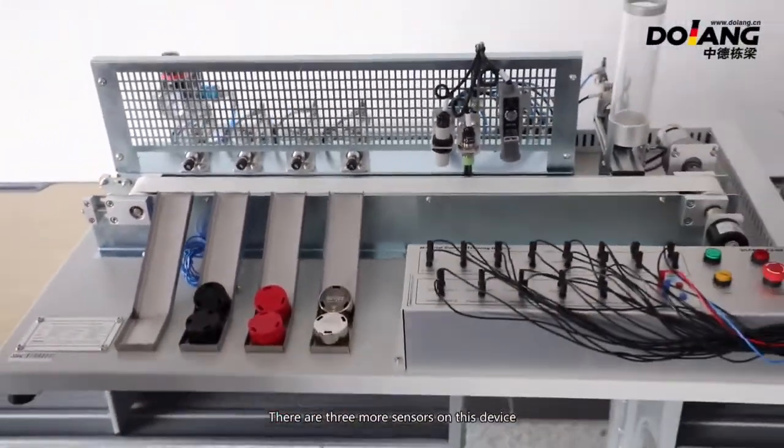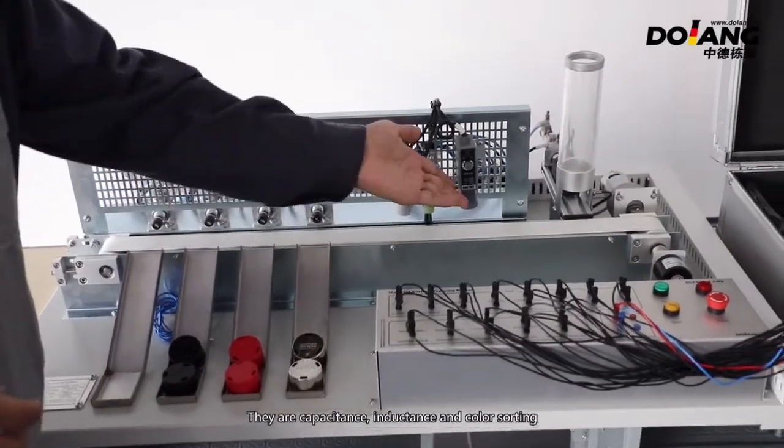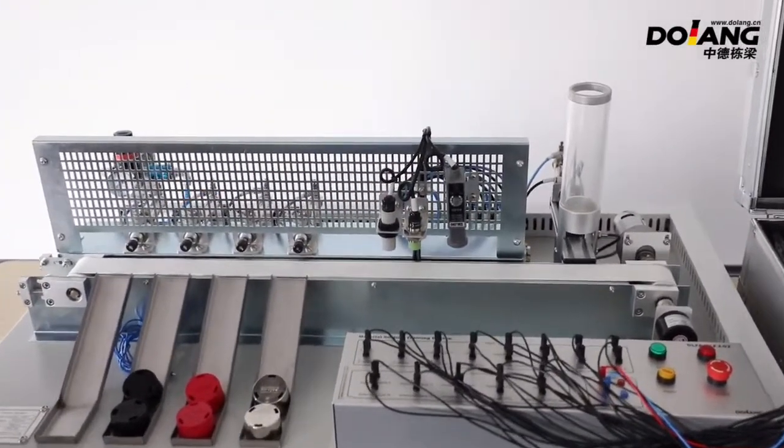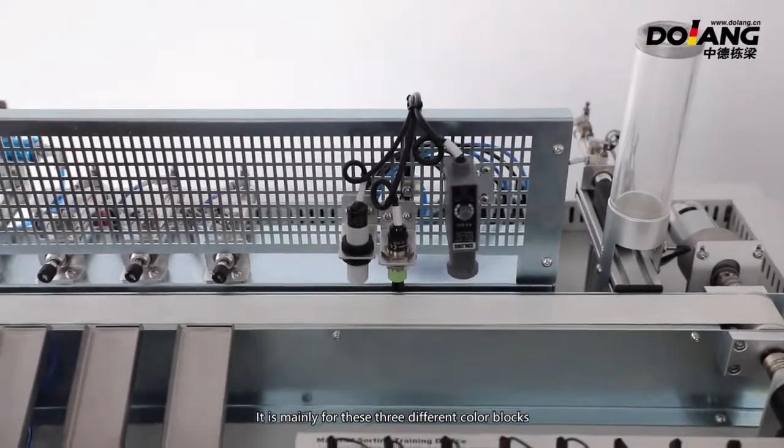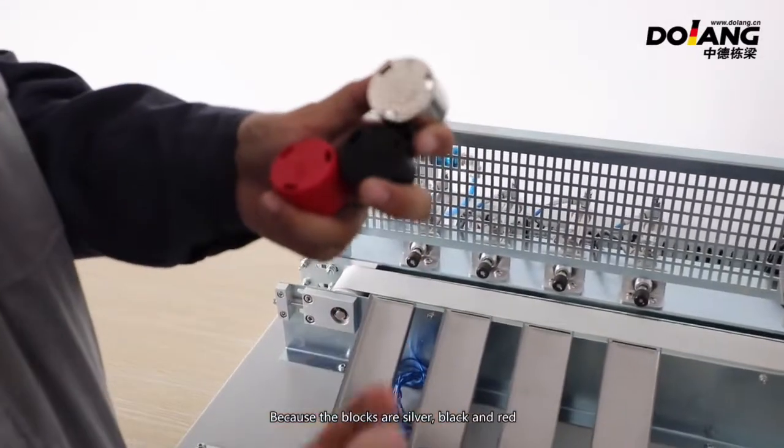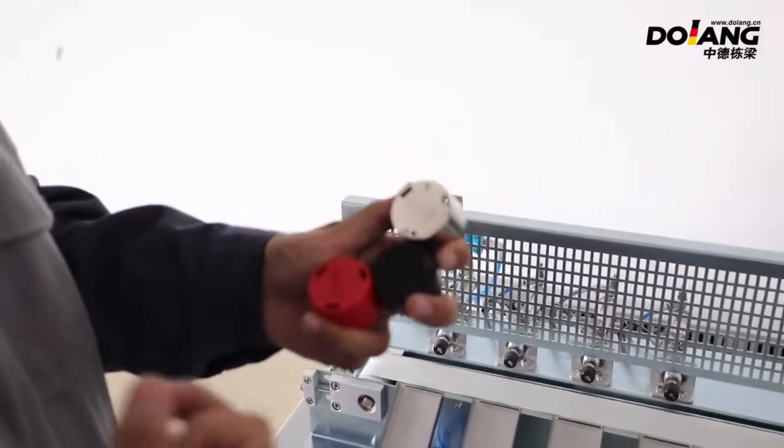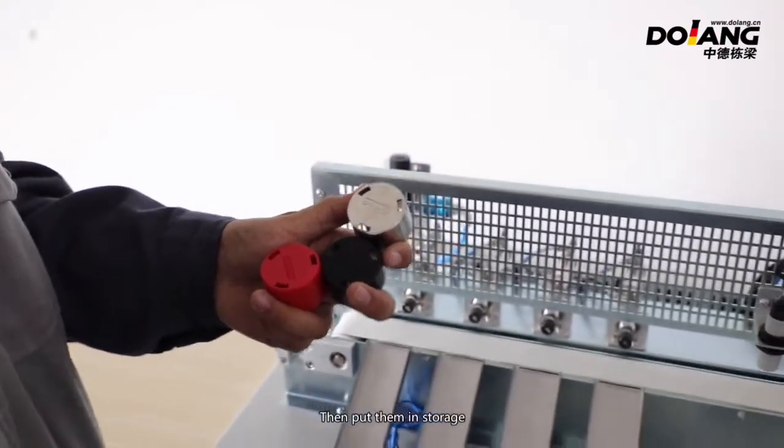There are three more sensors on the device. They are capacitance, inductance, and color sorting sensors. They're mainly for detecting three different color blocks: silver, black, and red. The main function is to perform real-time sorting inspection, then place them in storage.